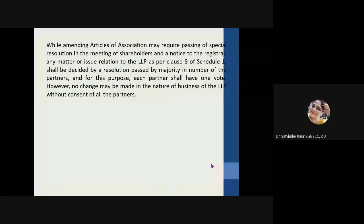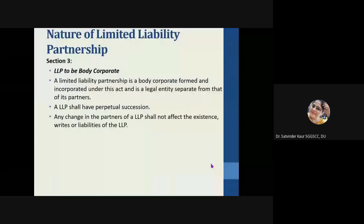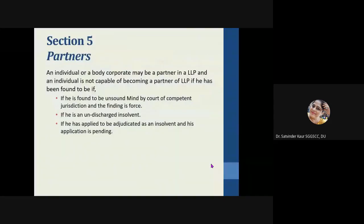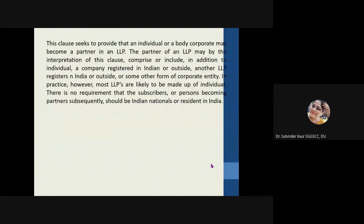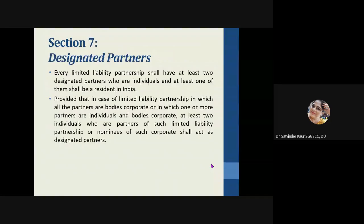The First Schedule has already been covered. Section 3 regarding LLP as a body corporate has been discussed. Section 4 covers the non-applicability of the Indian Partnership Act. Section 5 covers who can be partners and the capacity of partners. The minimum number of partners is two, with no maximum limit, but if the LLP carries on with fewer than the required number individually for more than six months, there will be personal liability. Section 7 covers designated partners — at least two minimum designated partners are required, and at least one of them should be resident in India.